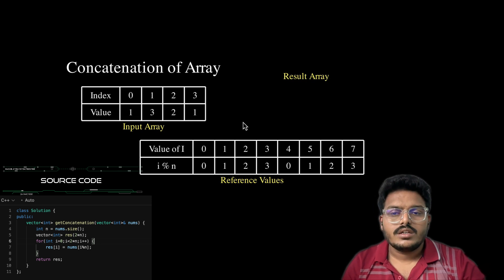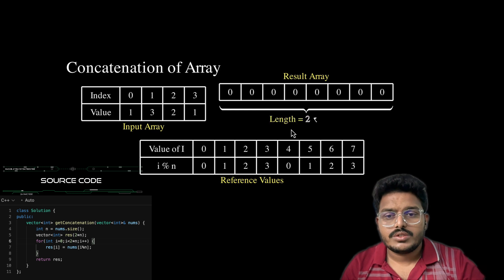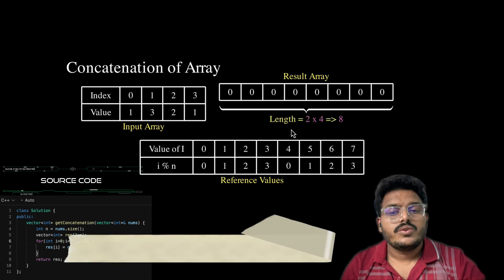We take the result array of length double of our input. The length should be 2 times 4, that is 8. Initially we take the result array with all zeros. Let's start traversing the array.